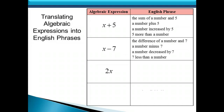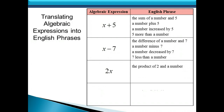How about 2 times x? An English phrase to represent 2 times x: we could say the product of 2 and a number, or 2 times a number, or twice a number. We wouldn't use the word of in this case because the 2 is not a percent or a fraction.